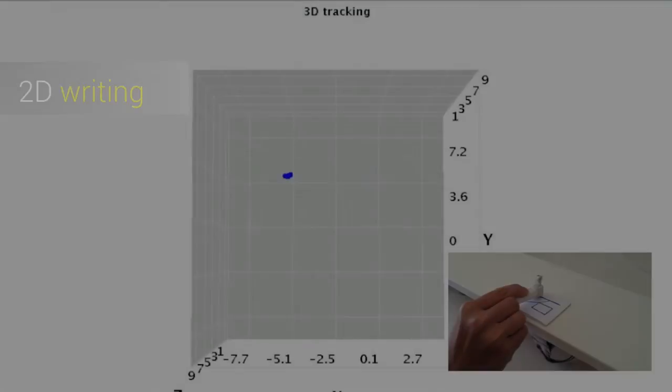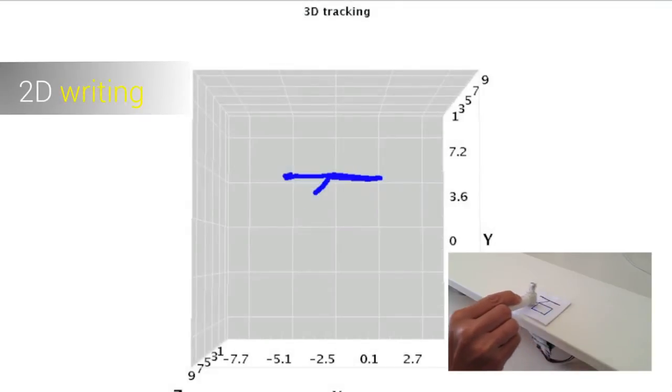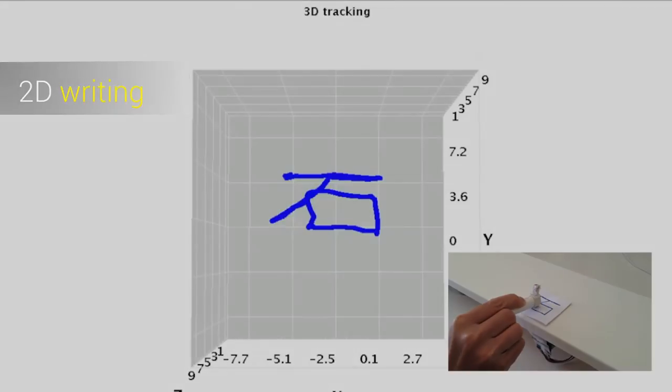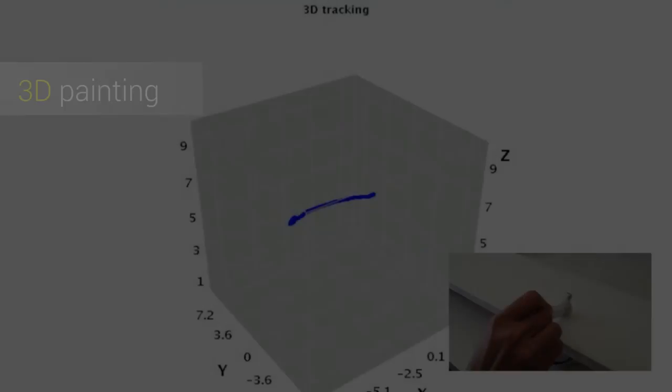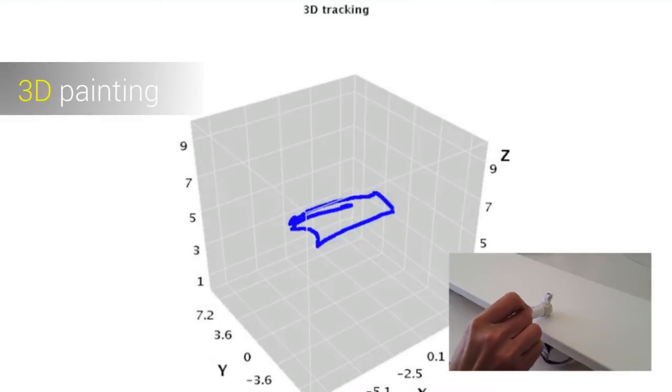Besides the thumb and finger configuration, U-Track can enhance the interaction richness through other form factors. The sensors can be mounted under the table and enable the surface to be an interactive space for writing or painting in 3D.